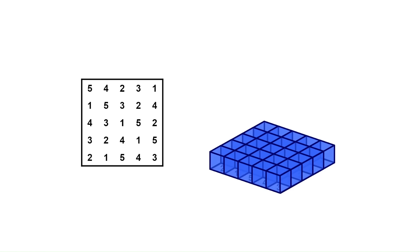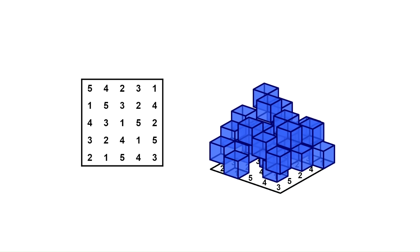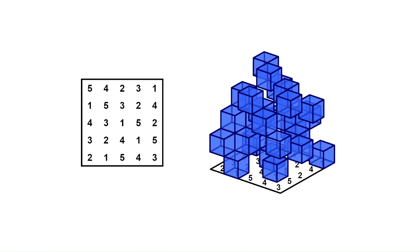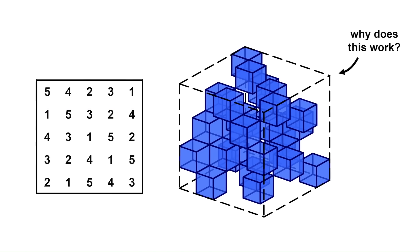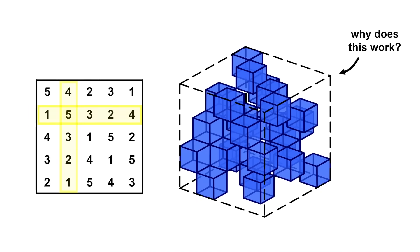Here's another example with a 5x5 Latin square. Just raise each cube to the designated height, and that's another minimal imaginary cube. Can you explain why this works? See if you can make an argument using the row and column properties of Latin squares.